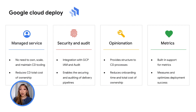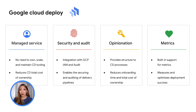Google Cloud Deploy's opinionation aims to reduce onboarding time and cost of ownership by providing structure to continuous delivery processes. You can define releases and progress them through environments such as test, stage, and production, and there's a one-step promotion and rollback of releases via the web console, CLI, or API. In addition, there is built-in support for metrics to measure and optimize deployment success.